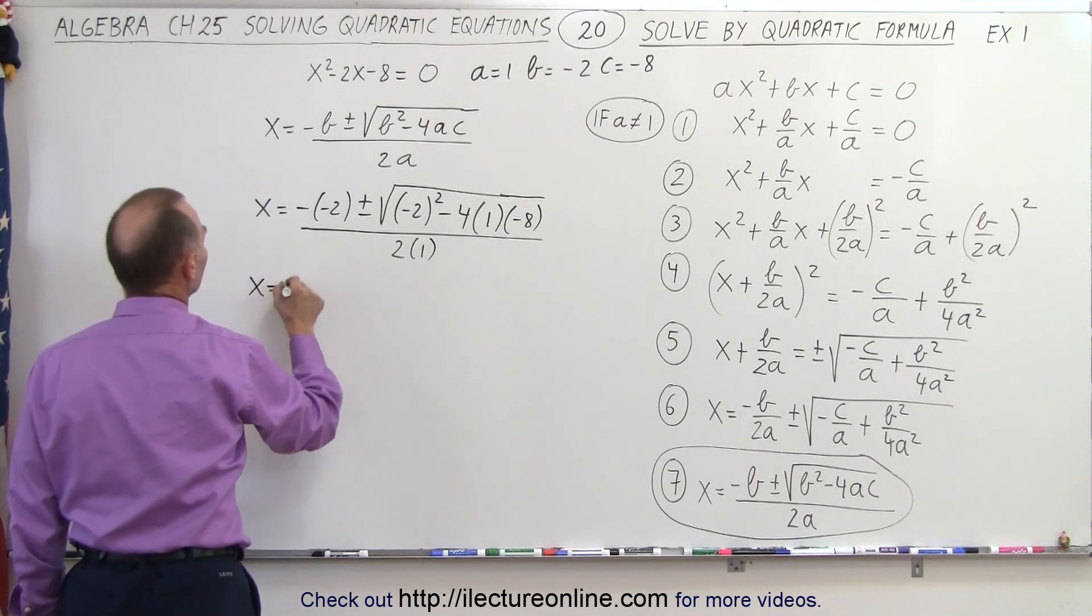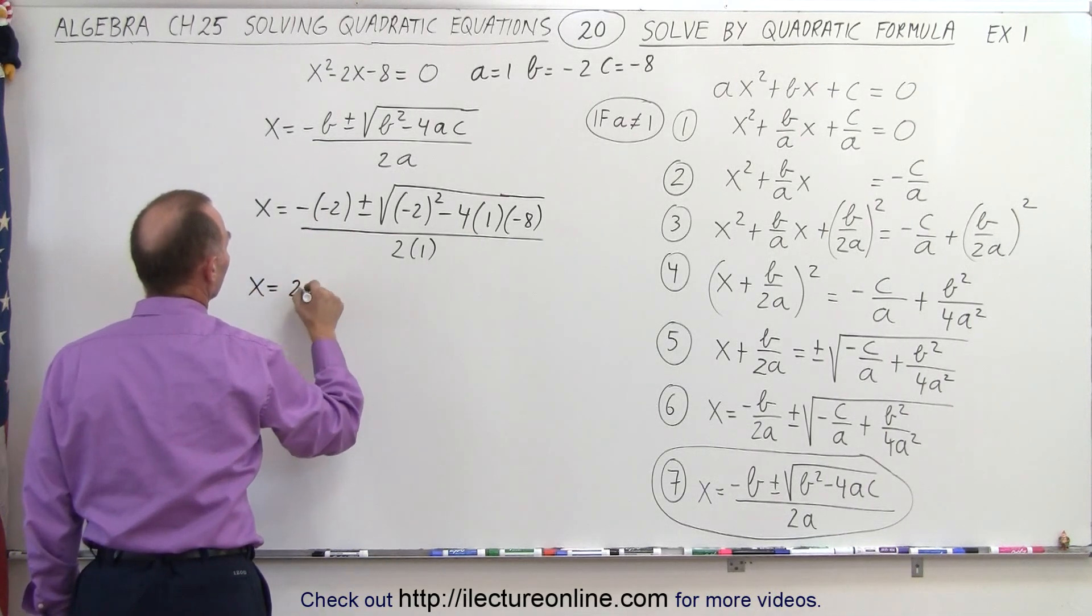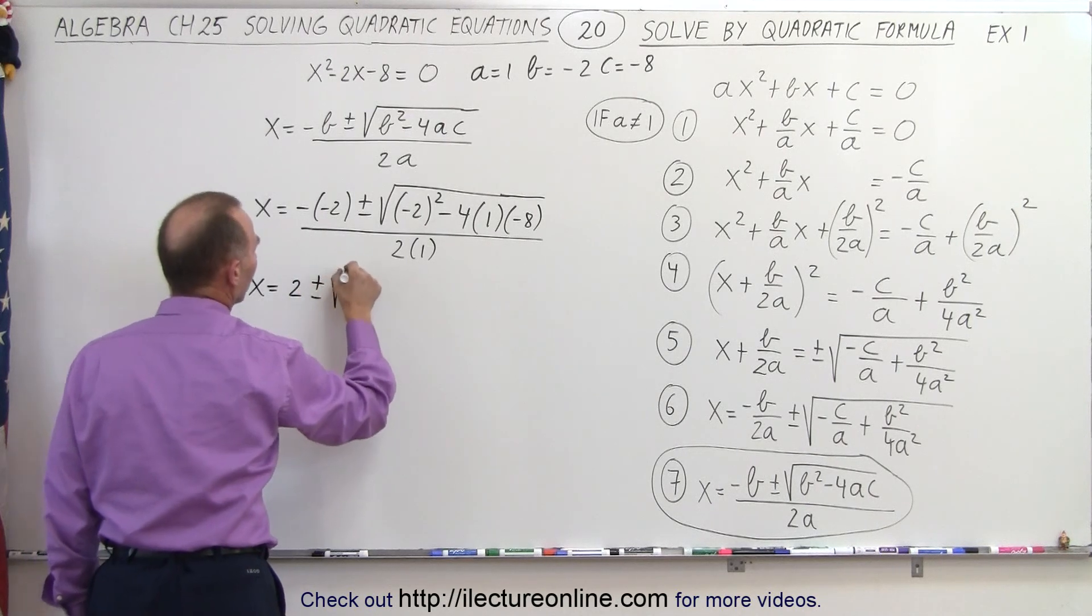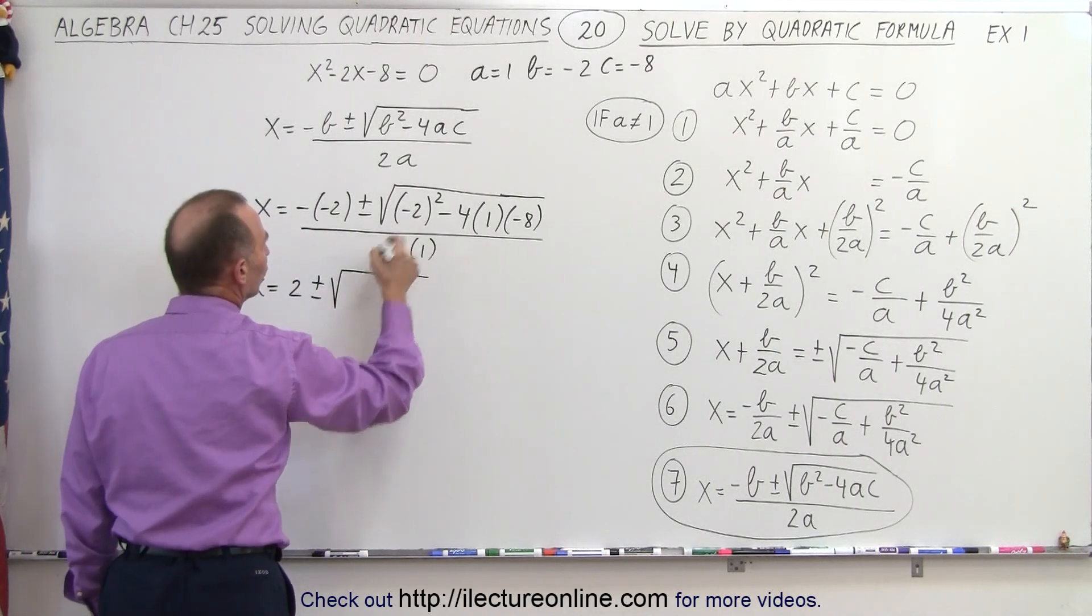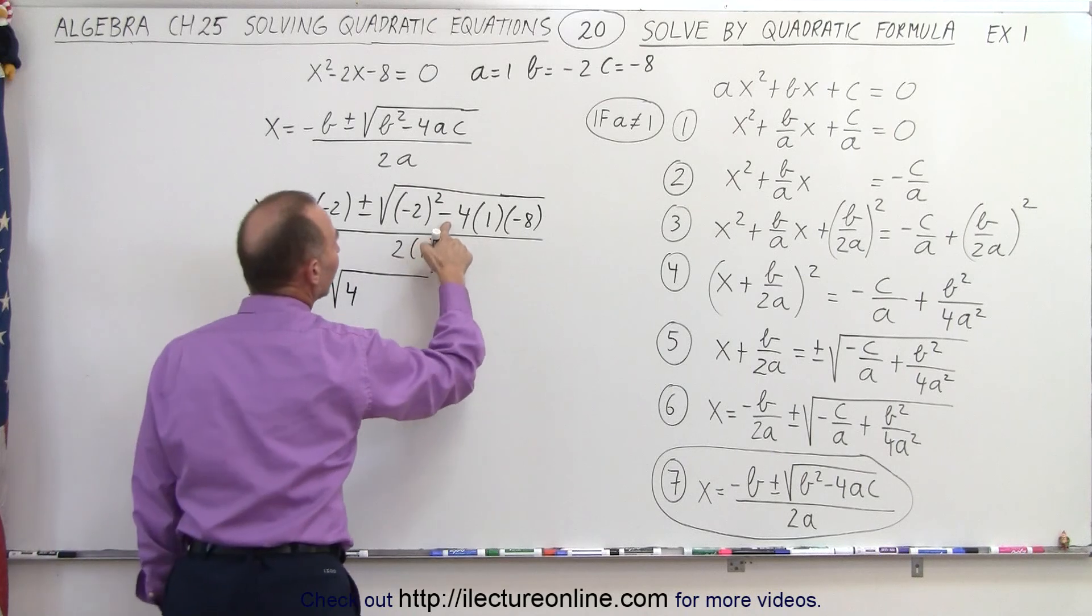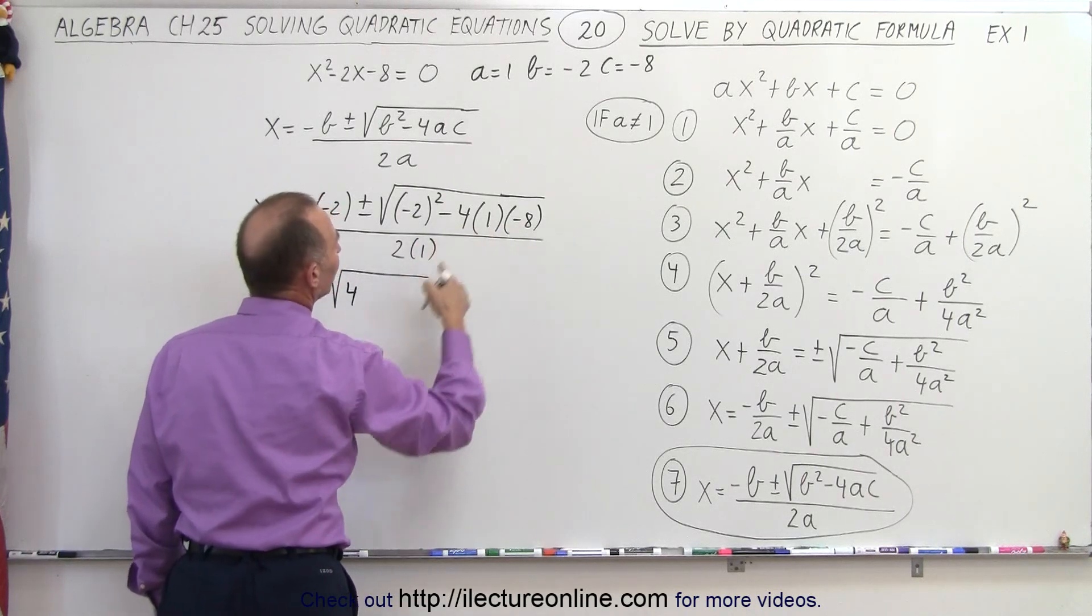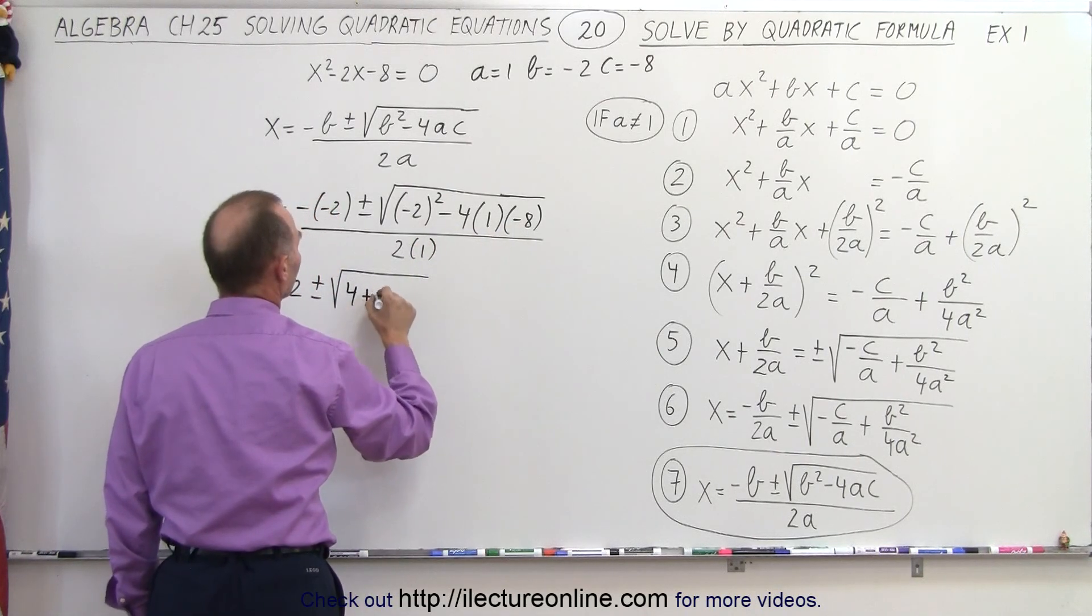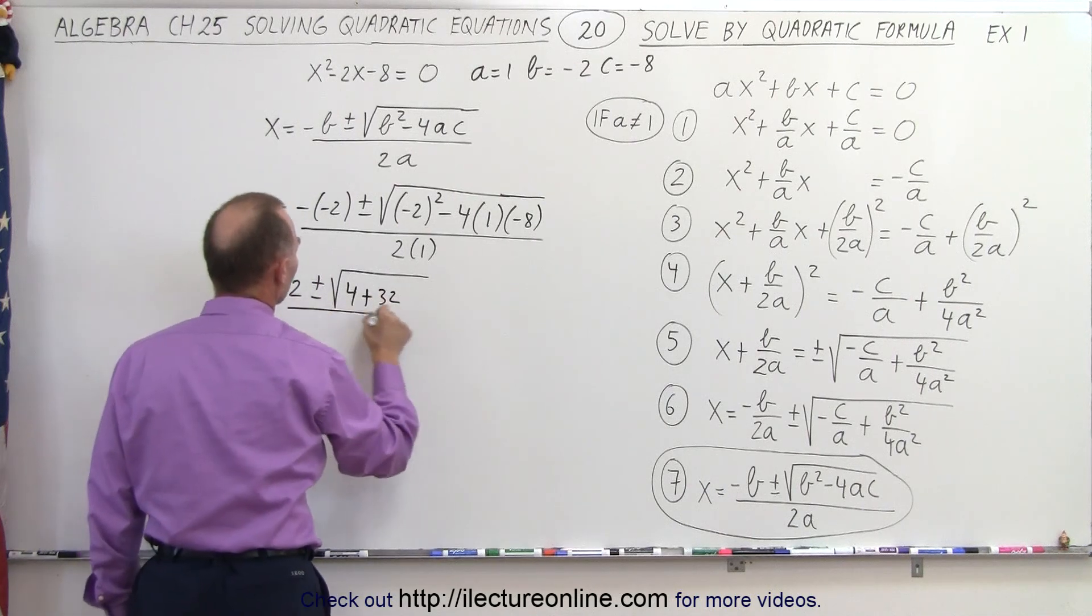X equals minus times a minus, which is plus 2, plus and minus the square root of negative 2 squared, which is 4, minus times a minus is plus, 4 times 8 is 32, so plus 32, all divided by 2.